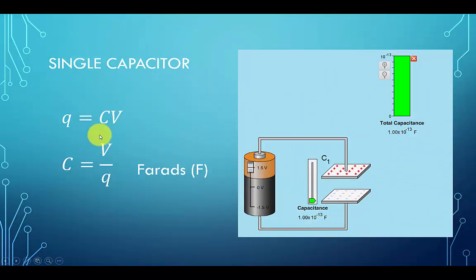So here we have a single capacitor and as a way of review, Q, which is the charge, is equal to CV. Solve for C and we have V divided by Q, where V is the voltage and Q is the amount of charge, and C is the capacitance measured in units of farads.